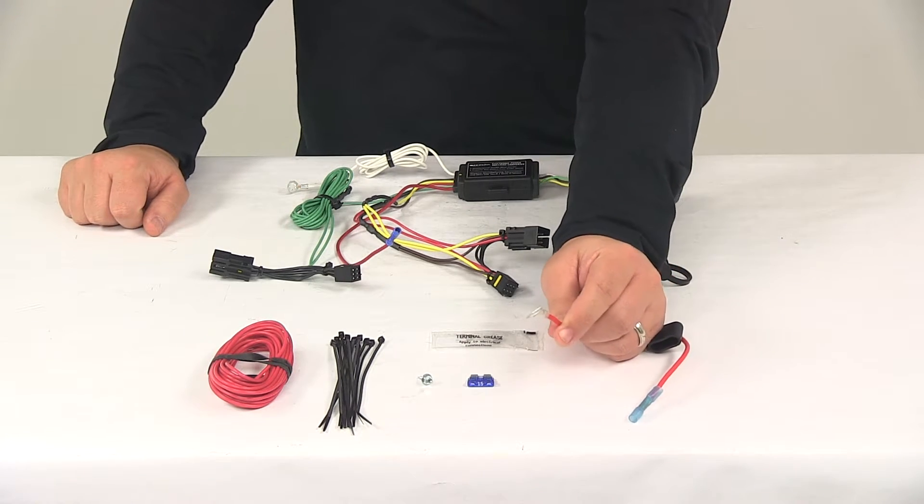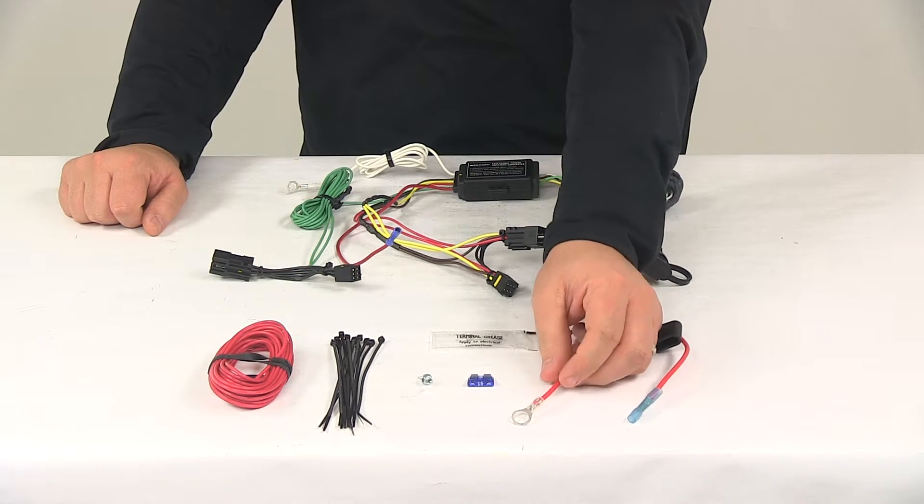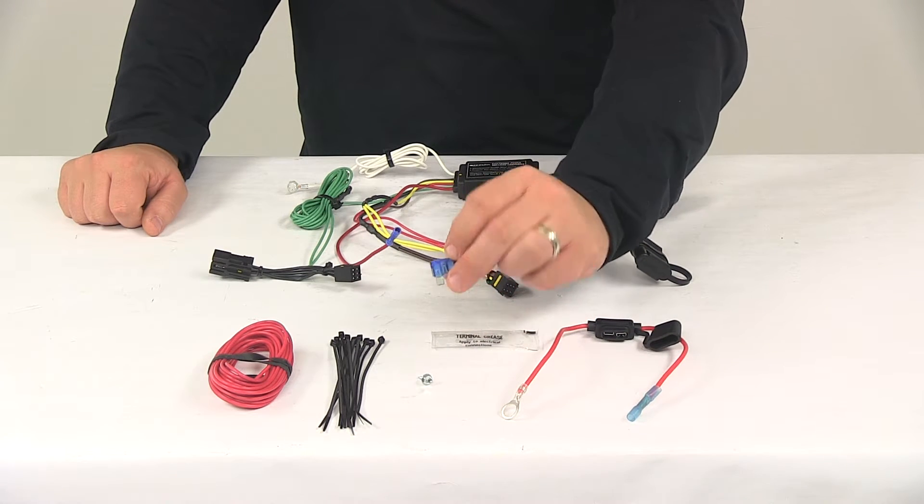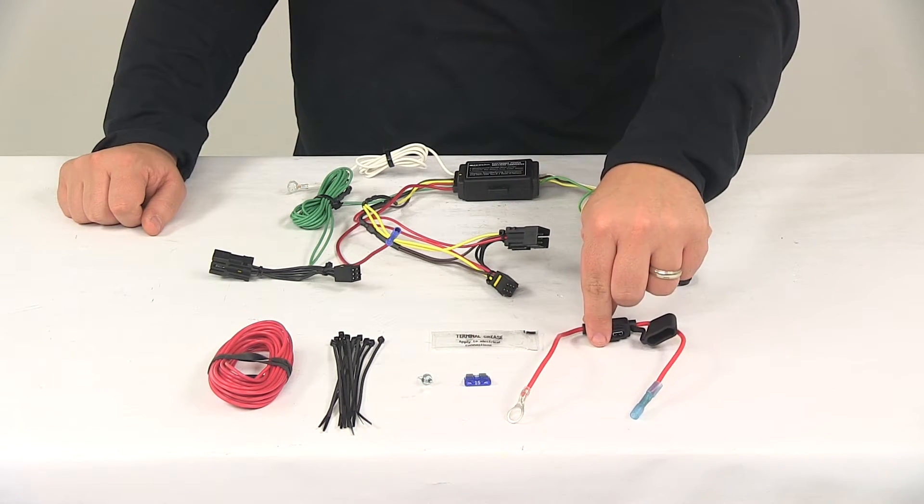The other half of the fuse holder gets connected to the positive post of the vehicle battery. It's got a ring terminal pre-attached on there. And then the unit also comes with your 15 amp fuse. It goes directly in the fuse holder. It's got the cap that goes over to keep it safe and protected.